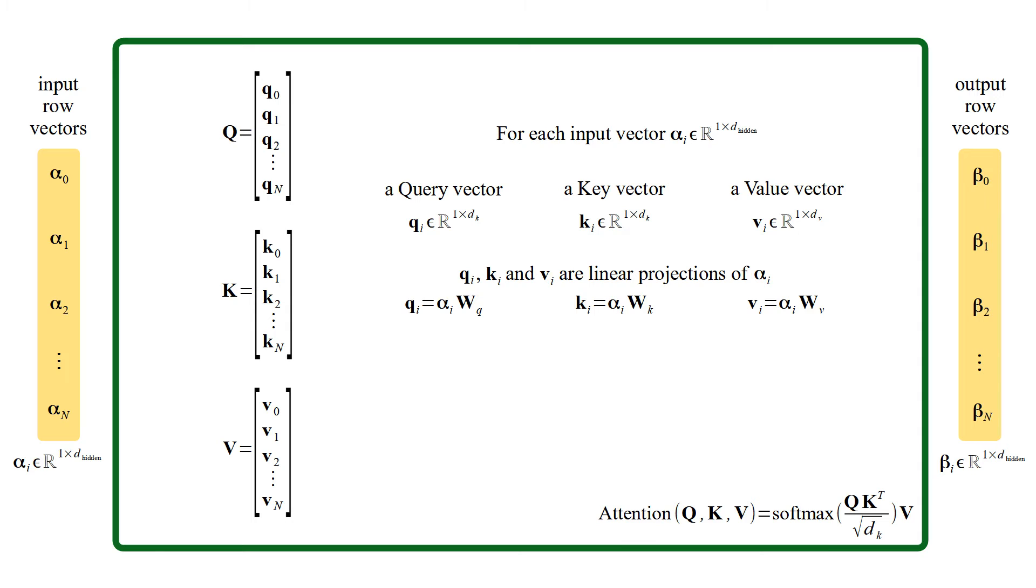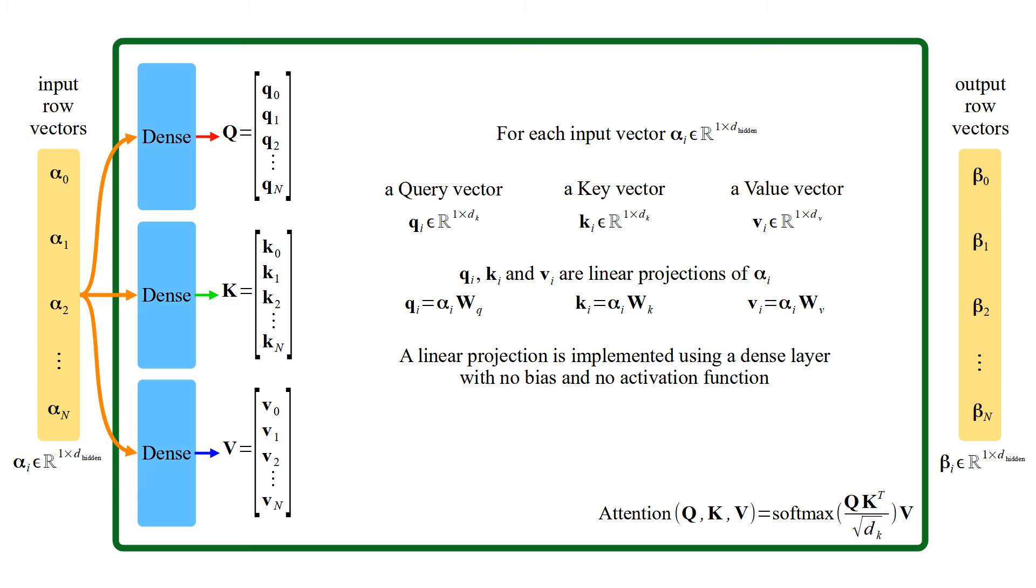Query, key and value vectors are linear projections of alpha i. A linear projection is implemented using a dense layer with no bias and no activation function. WQ, WK, and WV are weight matrices of dense layers.